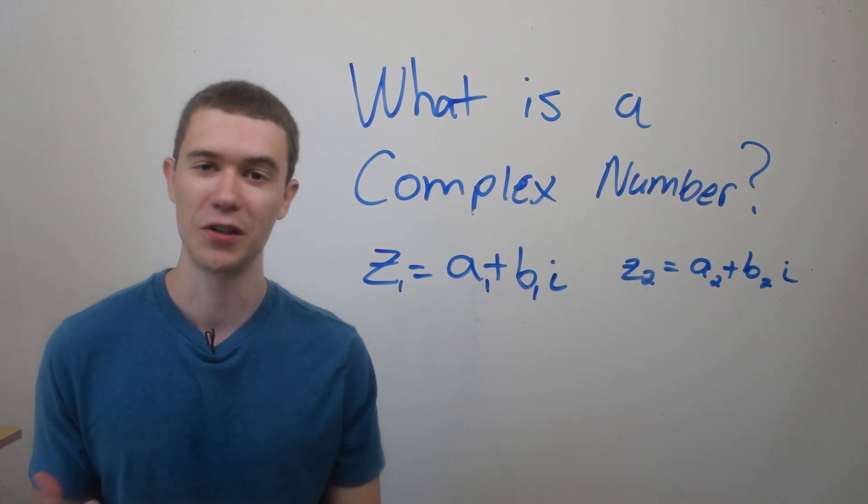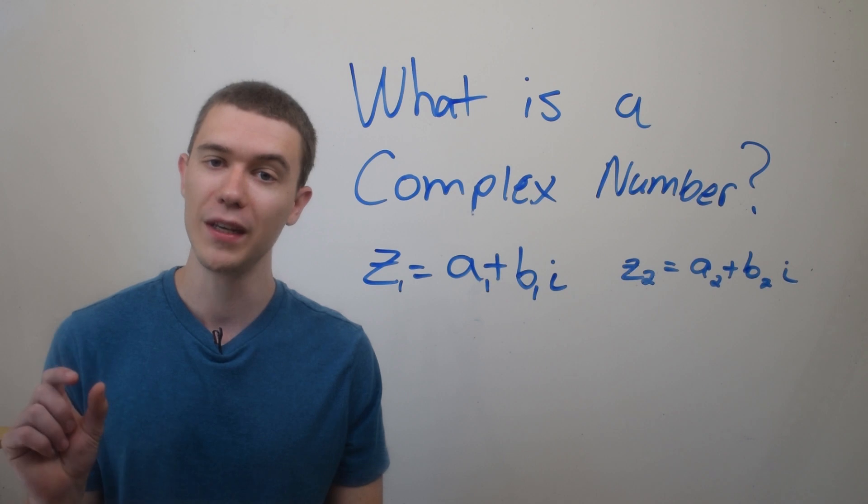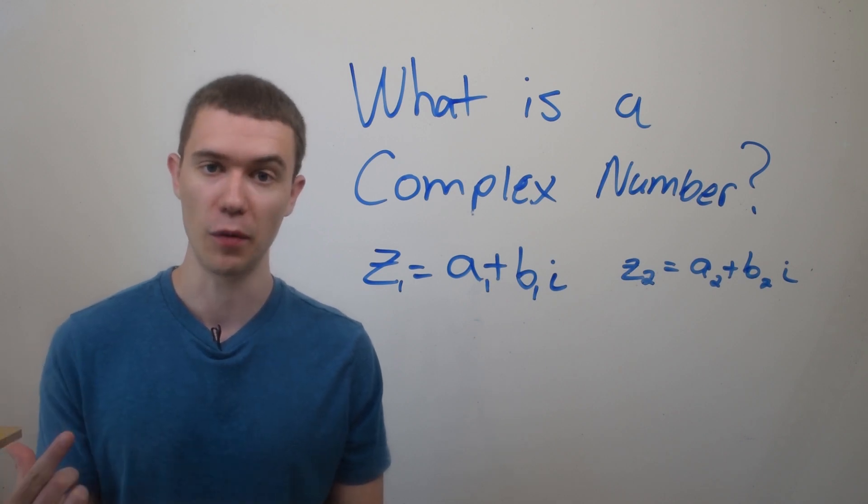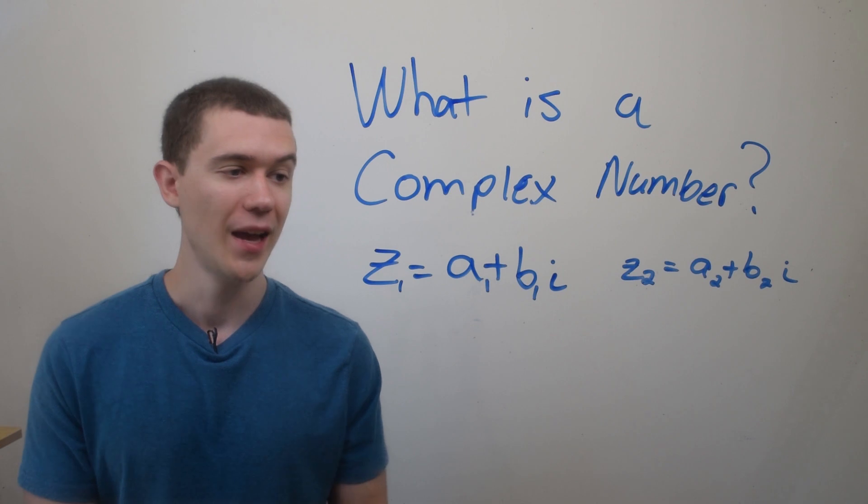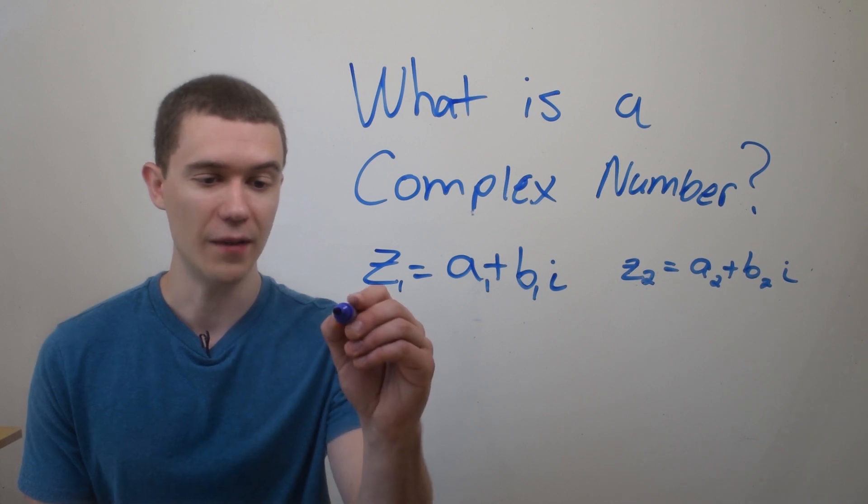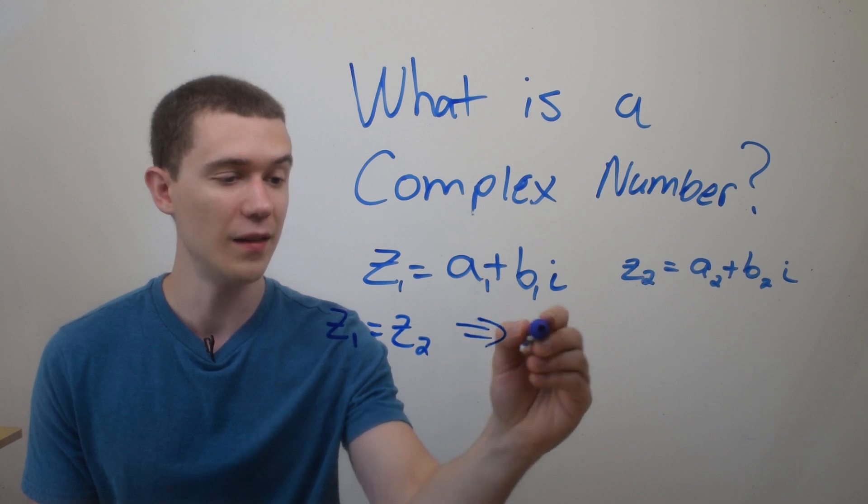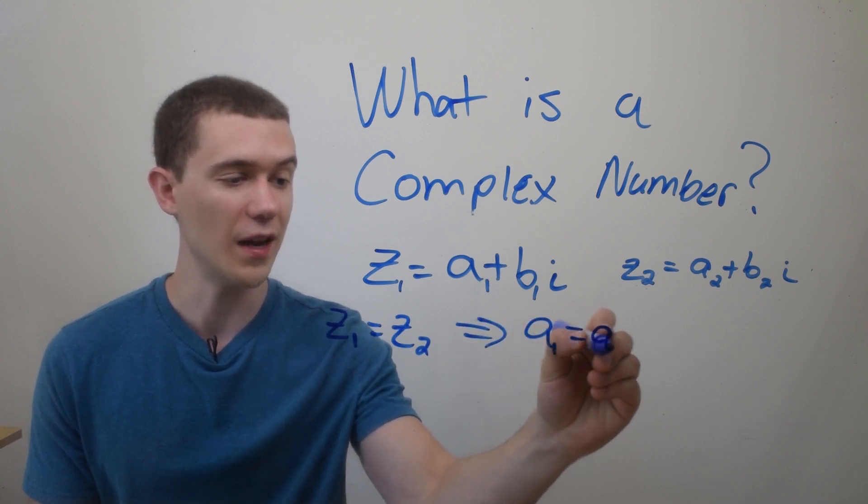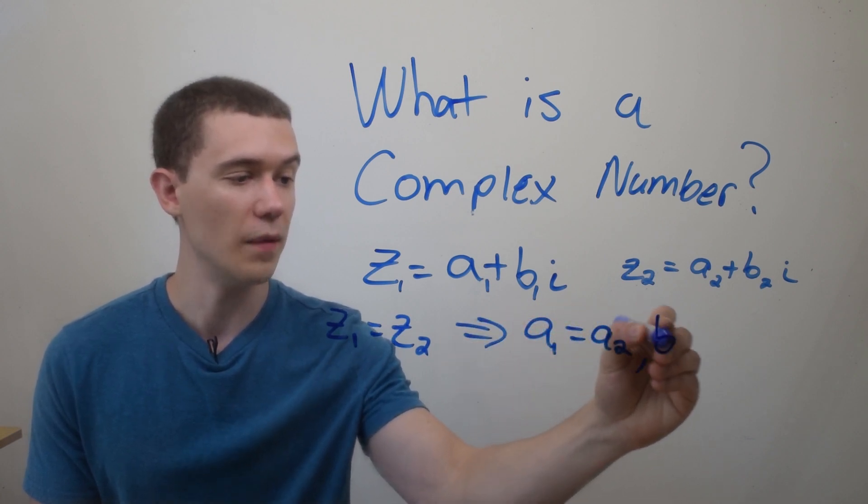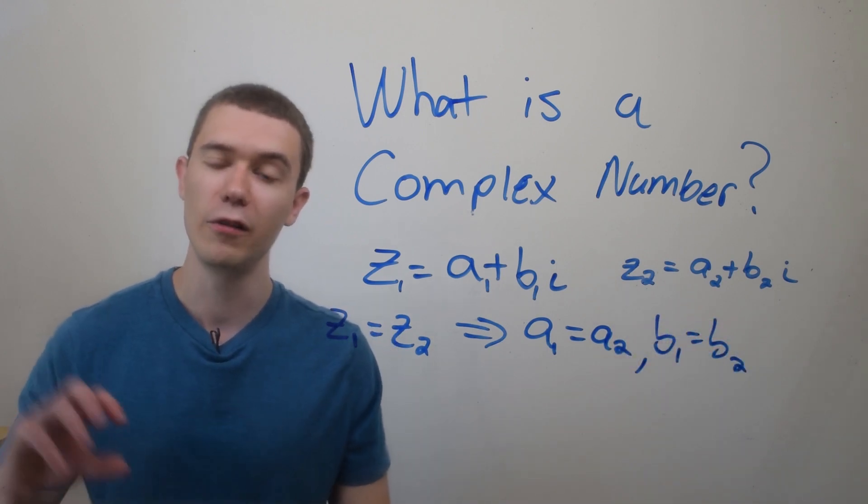I'll end this introduction by saying that two complex numbers are equal if and only if their real parts are equal and their imaginary parts are equal. So if we have two complex numbers z1 and z2, and z1 equals z2, then a1 equals a2 and b1 equals b2. This might seem obvious but it'll help us solve equations later.